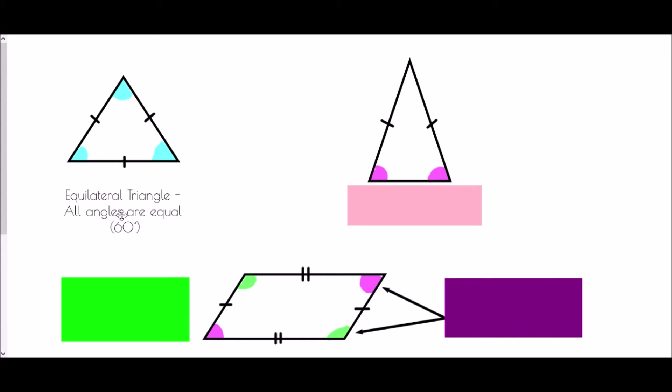For the isosceles triangle, the rule is that the base angles are equal — the two angles at the base of the equal-length sides. The triangle may be drawn in a different orientation, but as long as you find the two angles at the bottom of the equal sides, those two angles will be the same.